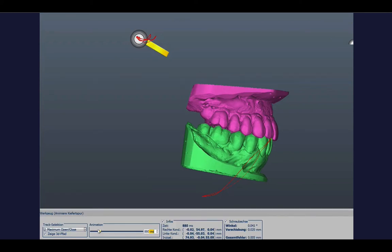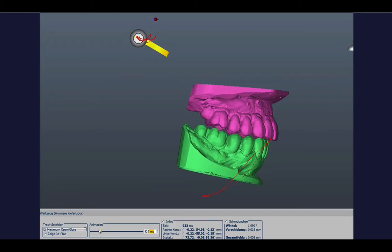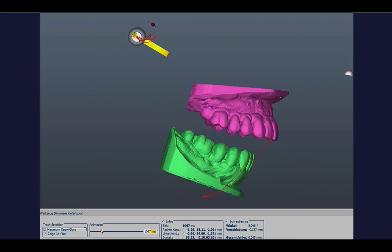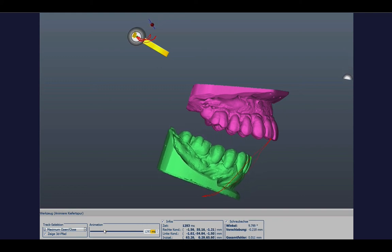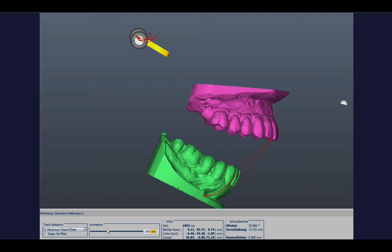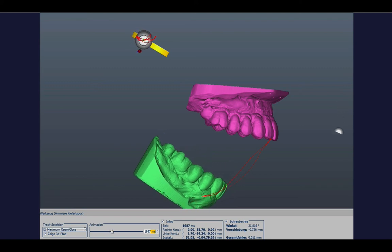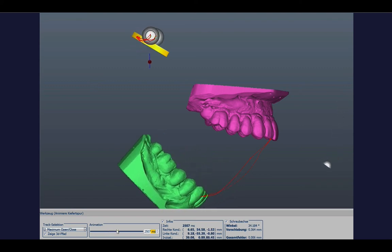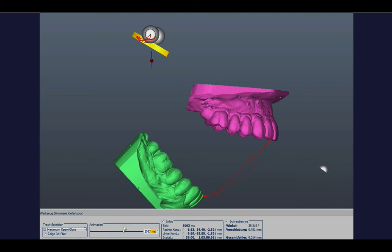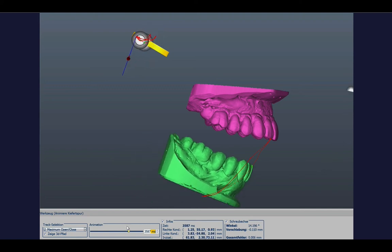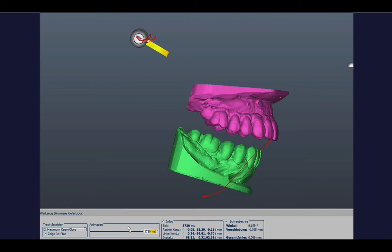And another case. Here you see that this also can show some strange things. When a retrusive-protrusive movement happens in the condyles, the axis can also move anterior. And then it moves downwards. In this case it doesn't move so far to the posterior.